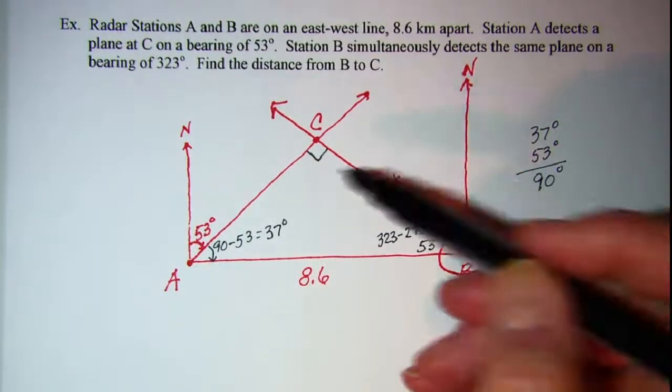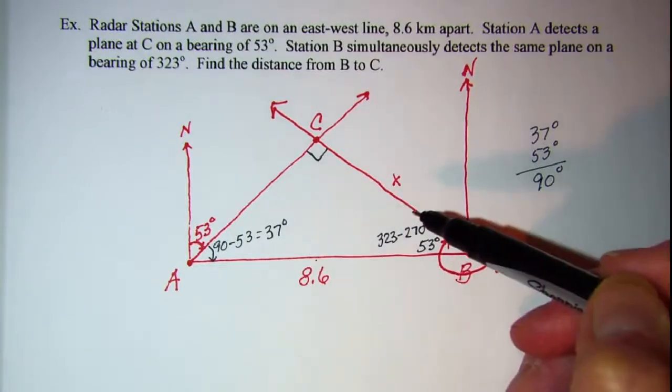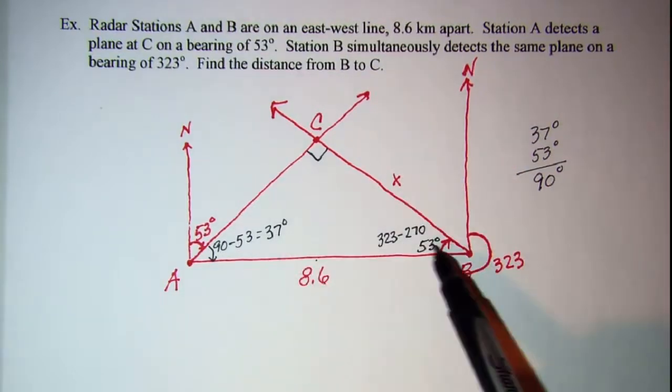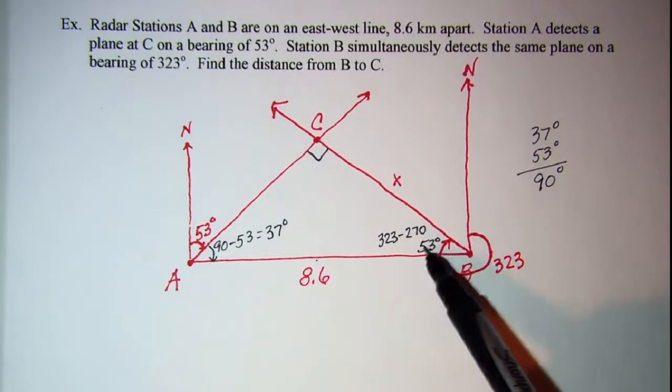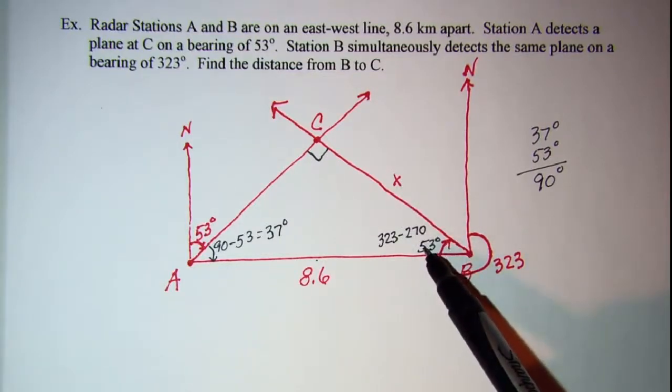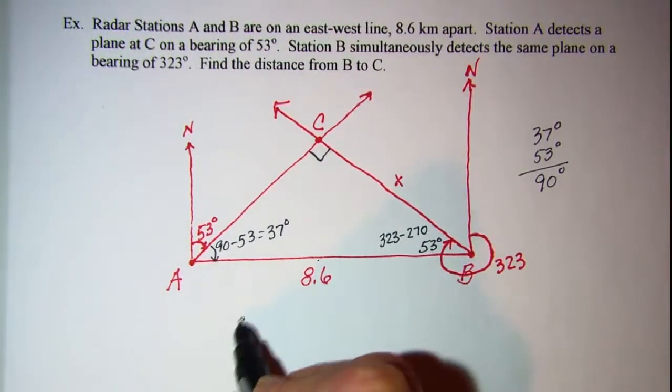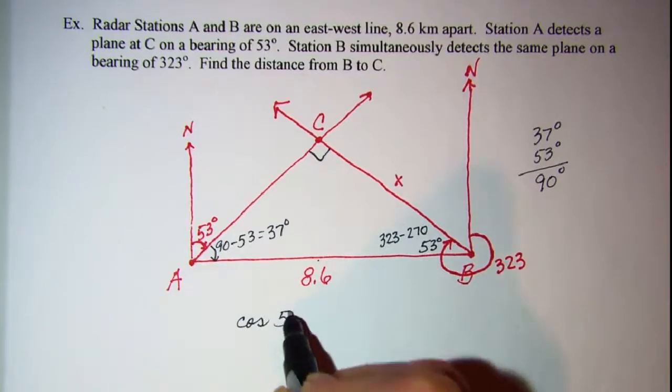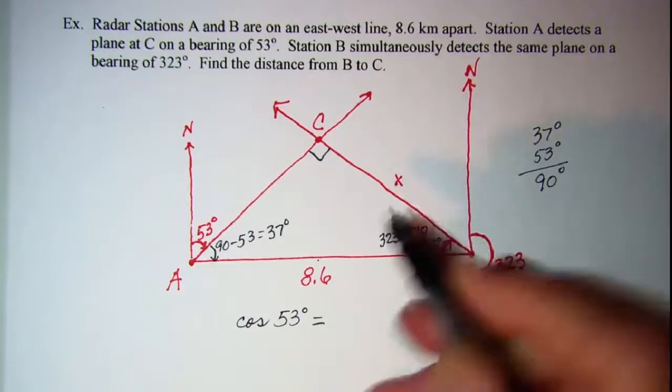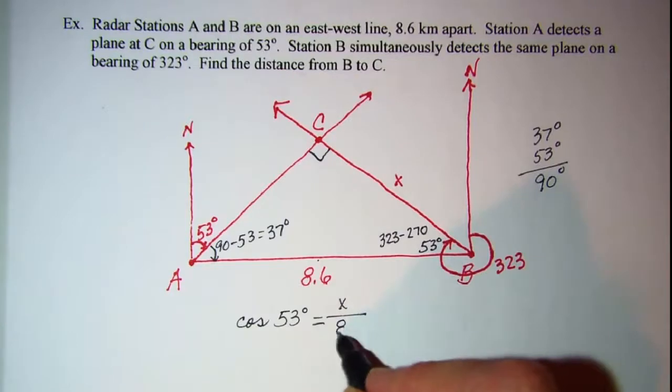Well we can see that the side opposite the right angle is 8.6. And then we can either use this angle or this one, it doesn't matter. Let's use this one, 53. That means our X is adjacent to the 53. So I'll have to use cosine. And I can state that the cosine of 53 degrees is equal to adjacent, which is X, over hypotenuse, which is 8.6.